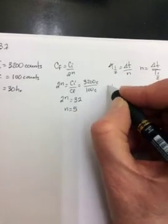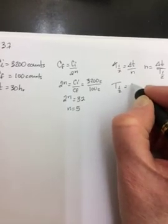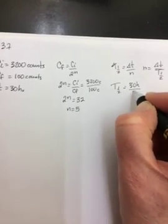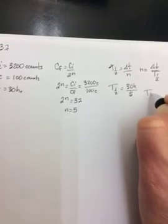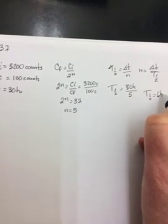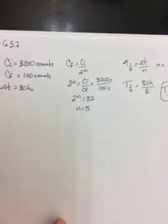Anyway, so you rearrange it, so T one-half is equal to 30 hours, and there's 5 of them, so the half-life should be 6 hours. Okay, so that's number 15.